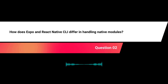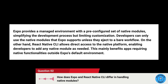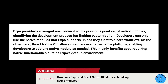How does Expo and React Native CLI differ in handling native modules? Expo provides a managed environment with a pre-configured set of native modules, simplifying the development process but limiting customization. Developers can only use the native modules that Expo supports unless they eject to a bare workflow. React Native CLI, on the other hand, allows direct access to the native platform, enabling developers to add any native module as needed, which mainly benefits apps requiring native functionalities outside Expo's default environment.